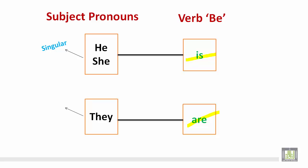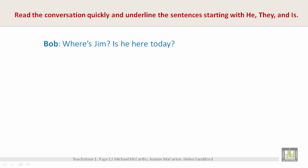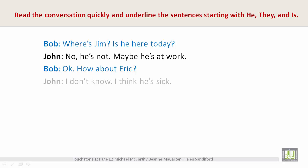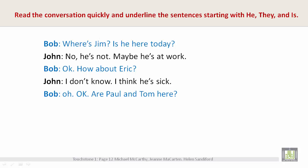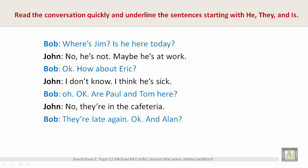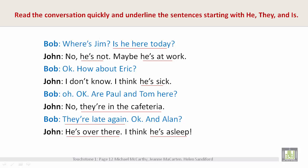Read the conversation quickly and underline the sentences starting with he, they, and is. 'Where's Jim? Is he here today? No, he's not. Maybe he's at work. Okay, how about Eric? I don't know. I think he's sick. Oh, okay. Are Paul and Tom here? No, they're in the cafeteria. They're late again. Okay, and Alan? He's over here. I think he's asleep.' Now let's look at the underlined sentences: 'Is he here today? He's not. He's at work. He's sick. They're in the cafeteria.' Remember, 'they're' is a contraction of 'they are.' 'They're late again. He's over there. He's asleep.'